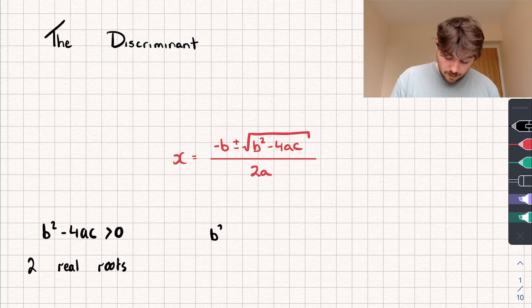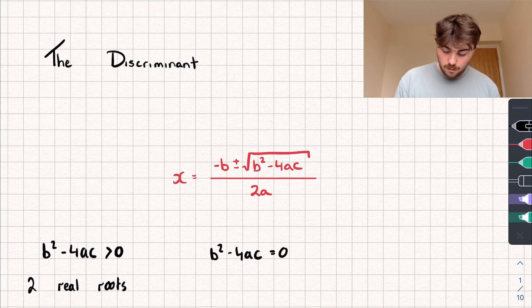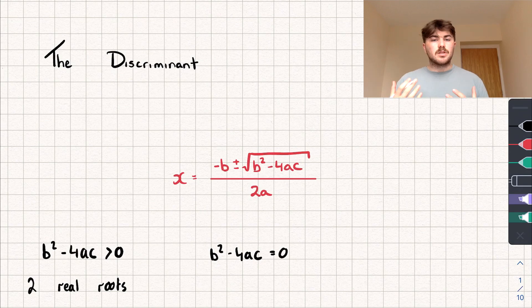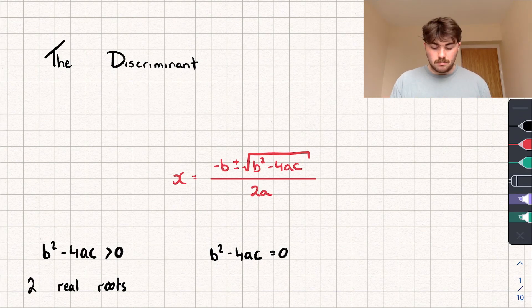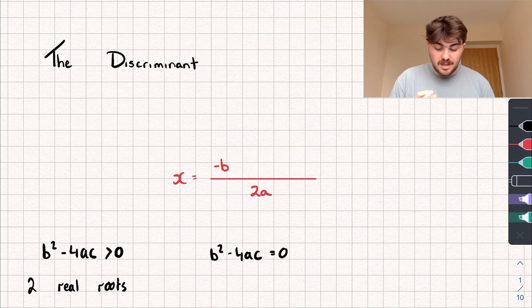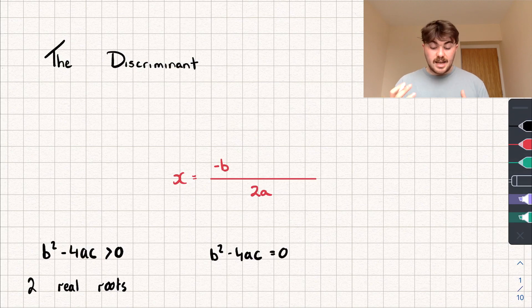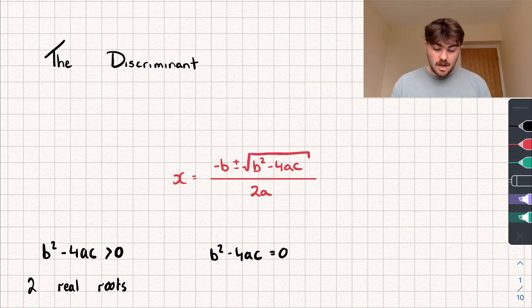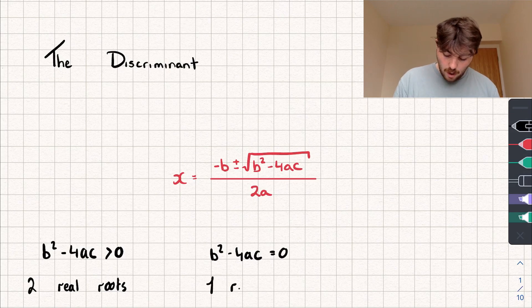Another case could be that our discriminant, b squared minus 4ac, is equal to 0. If that's the case, the square root of 0 is just 0, and so negative b plus 0 and negative b minus 0 — this square root might as well not be there because it's just negative b. So that means we get x equals negative b divided by 2a, and that's just going to give us one solution. So if our discriminant is equal to 0, we're just going to get one real root.